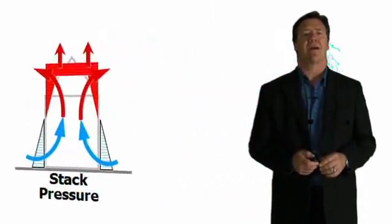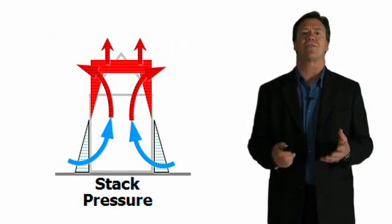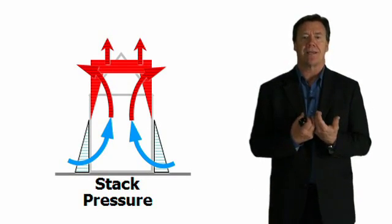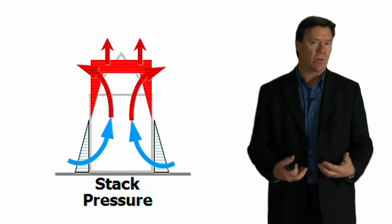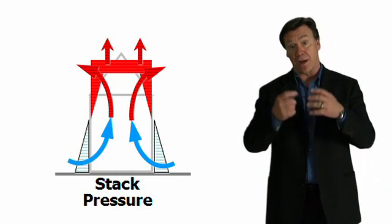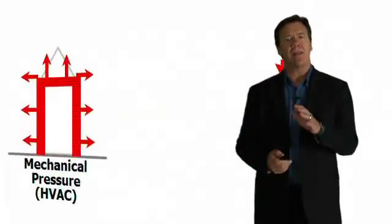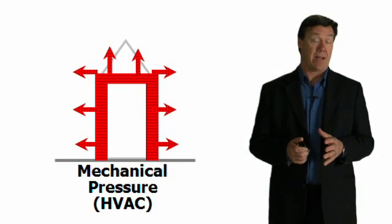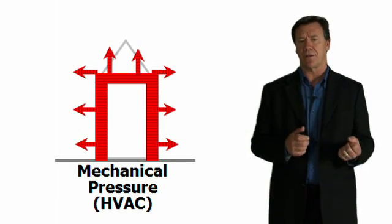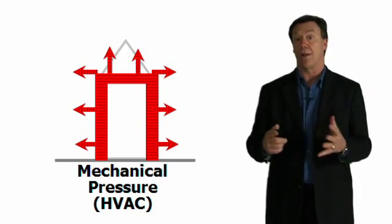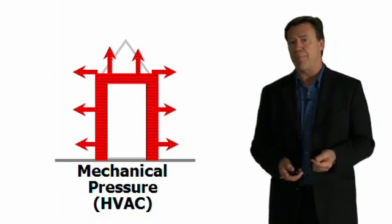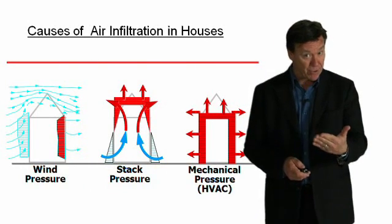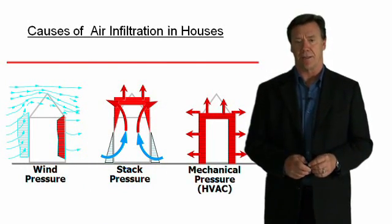The second cause is the stack effect. Warm air is more buoyant than cold air, so it wants to rise — we typically see air infiltrating into the lower parts of a structure and exfiltrating through the upper parts. Finally, mechanical systems: when HVAC equipment has duct leakage to the outdoors, it can cause the building to be under positive or negative pressure, with big impacts on overall building performance. That's why the code has a mandatory measure to seal ducts.